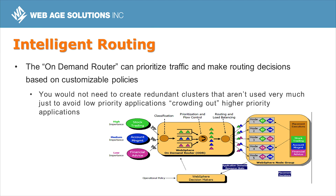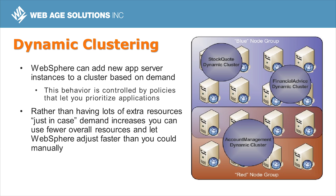WebSphere can take knowledge of application usage and deploy applications to additional servers to meet overall performance goals. The dynamic clustering feature works with intelligent routing — WebSphere can modify the size of clusters hosting applications based on demand. You define node groups and establish policies for what server template instances can run on a node and how many can run at any one time. WebSphere can then shrink the cluster for one application to free up resources for another cluster seeing a spike in demand, adjusting to changes much more rapidly than manual intervention.